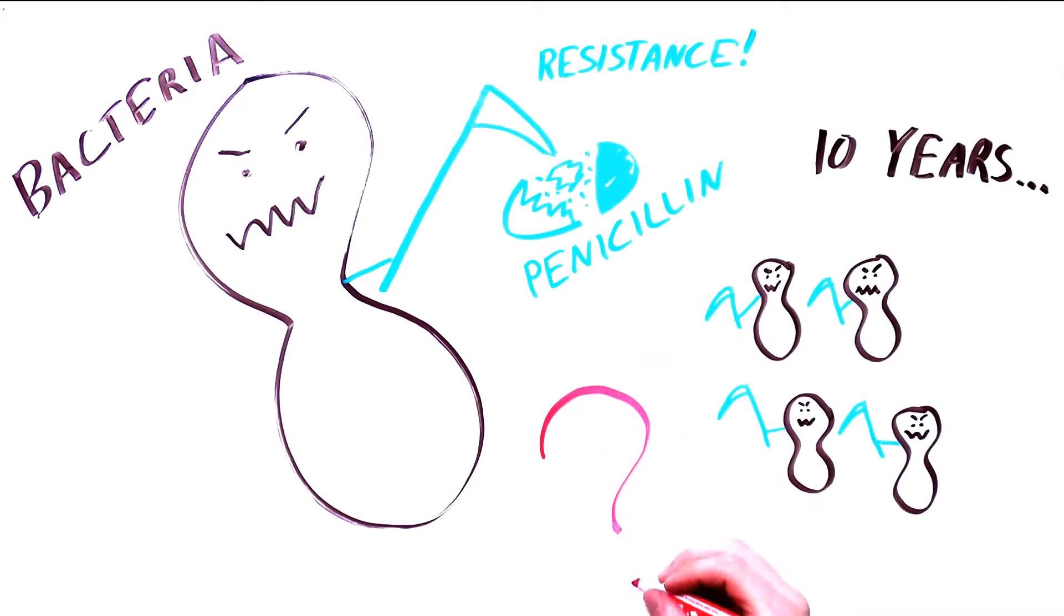It seemed the best way to counter antibiotic resistance was to develop new antibiotics. And so a second round of antibiotics were developed: Neomycin, ampicillin, erythromycin, all great drugs, but they weren't always effective for long.